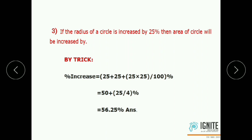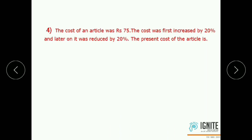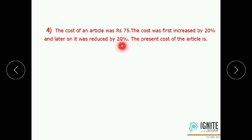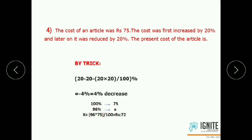For decrease cases, we use the negative sign. Fourth question: The cost of an article was Rs.75. The cost was first increased by 20% and later on it was reduced by 20%. What is the present cost of the article?